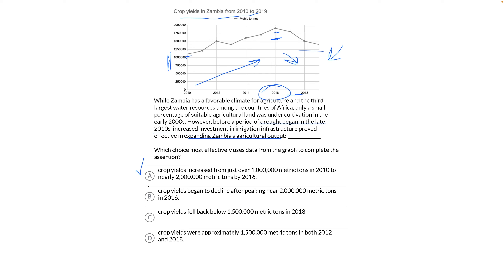Choice B: Crop yields began to decline after peaking near 2 million metric tons in 2016. We know that's true from the graph, but that doesn't support the argument that crop yields grew prior to 2016, so this is not the answer. Choice C: Crop yields fell back below 1,500,000 metric tons in 2018. That matches the graph, but it doesn't support our pre-2016 argument, so that's not the answer either.